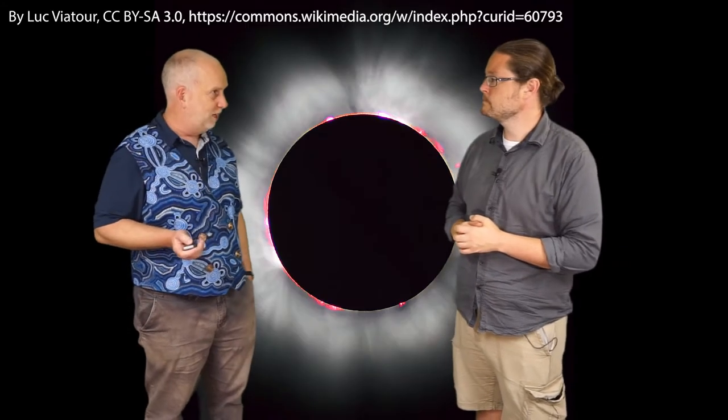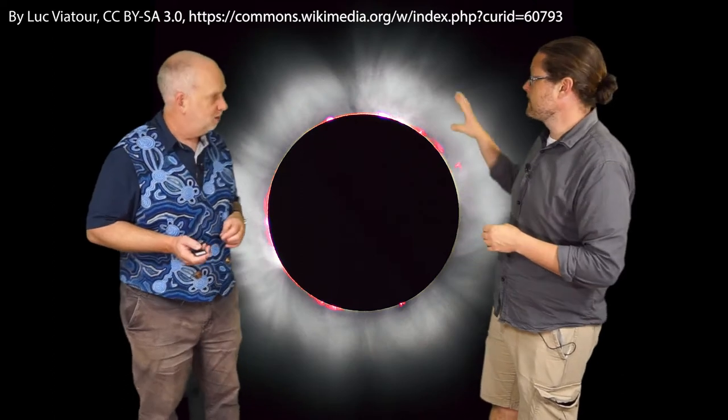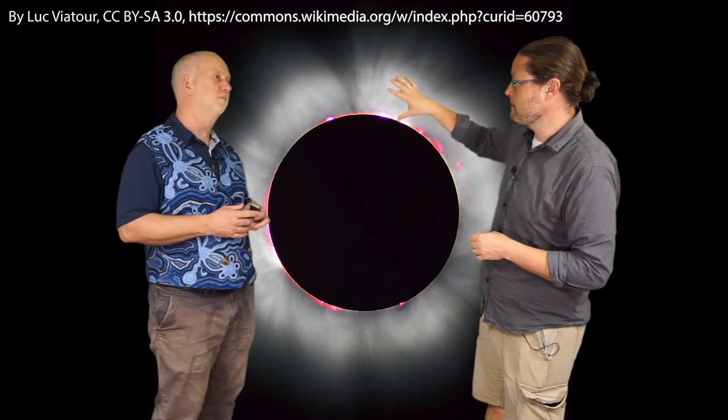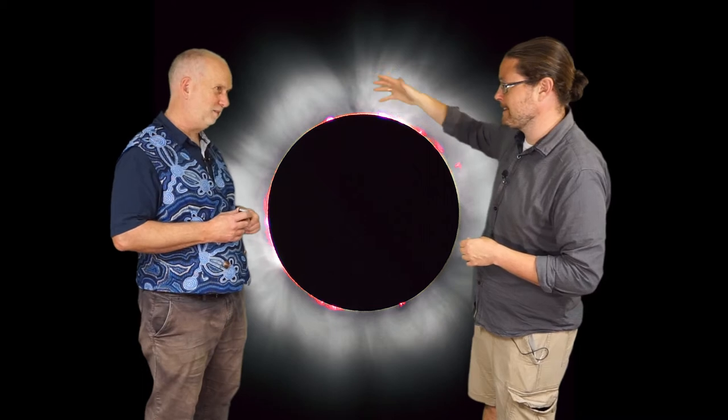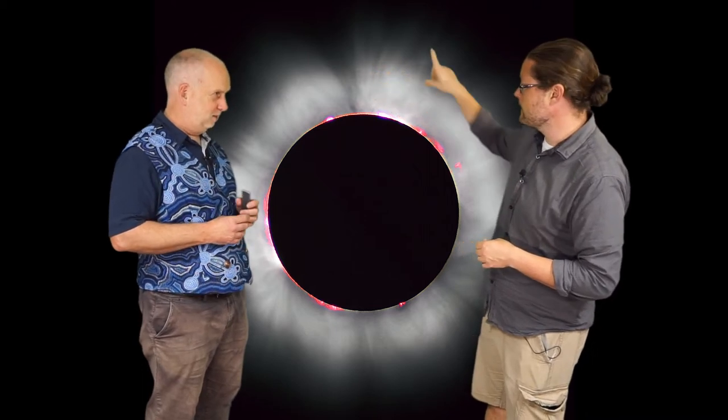Now, one way we can see it is during a solar eclipse. So we get the moon blocking most of the light from the sun, kind of acting like a shade, allowing us to see the outside.